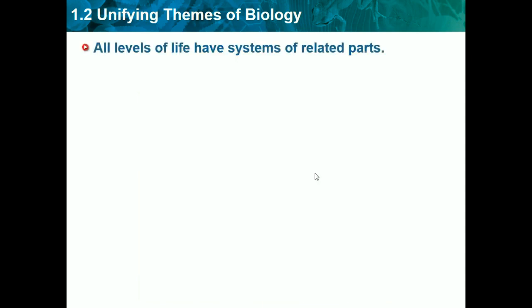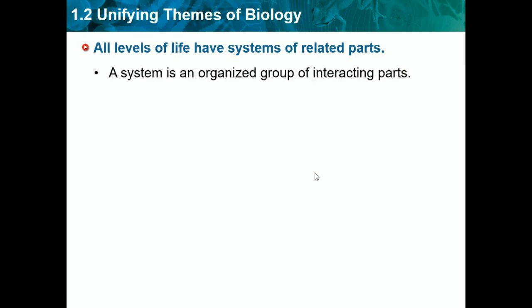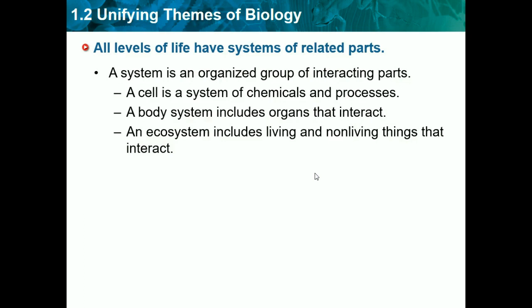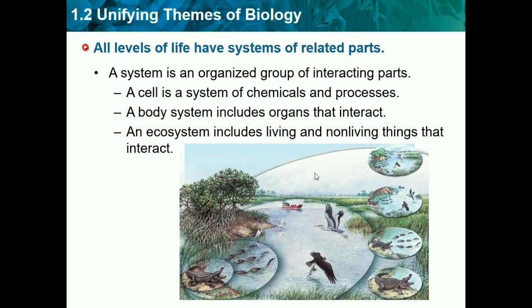All levels of life have systems of related parts. A system is an organized group of interacting parts. A cell is a system of chemicals and processes. A body is a system including organs that interact. And an ecosystem includes living and nonliving things that interact. These are just examples of systems which we will see a lot of in biology. This picture is showing a system of an ecosystem.